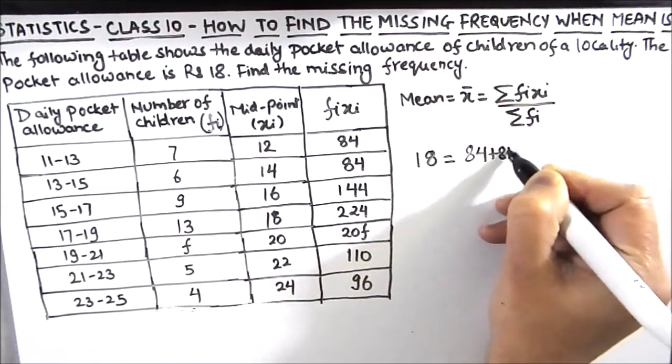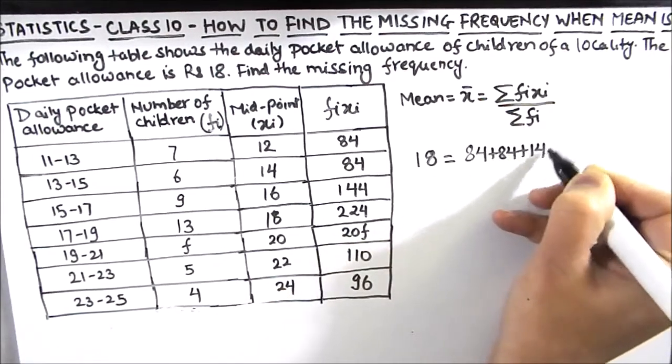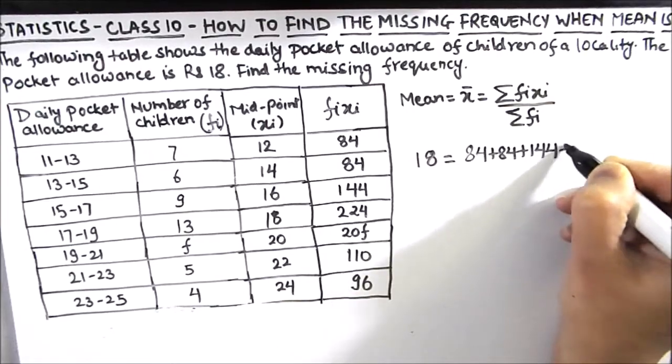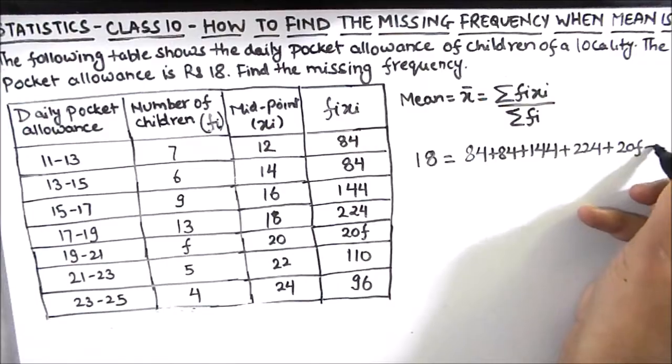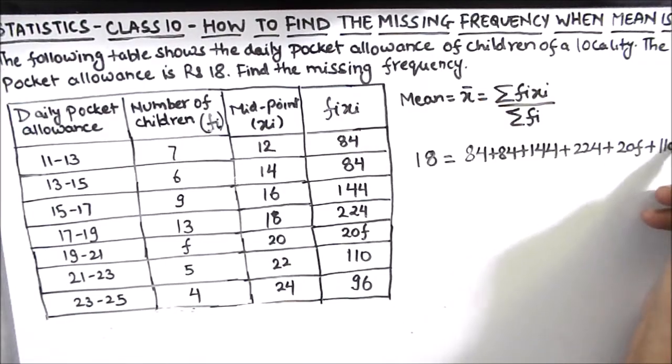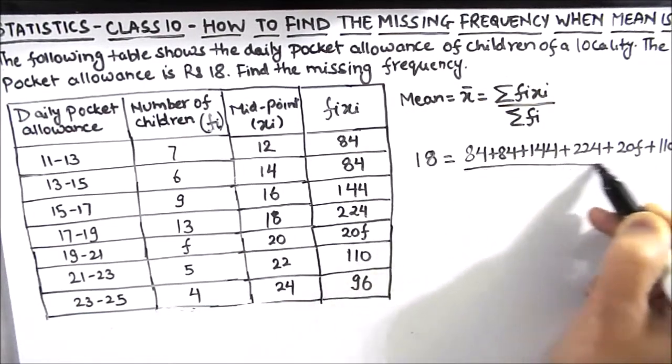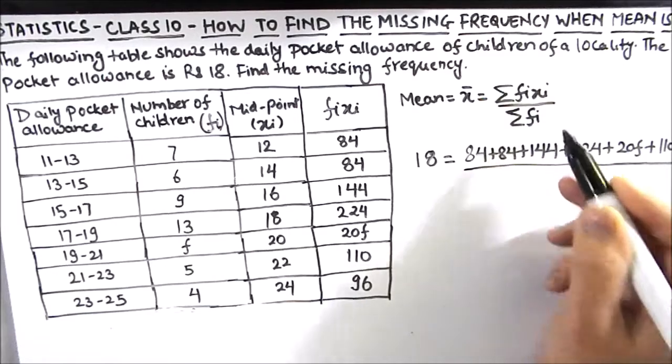So we are going to add 84 plus 84 plus 144 plus 224 plus 20f plus 110 plus 96.